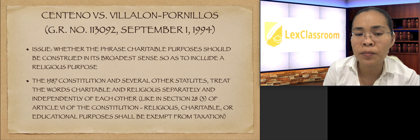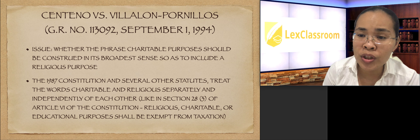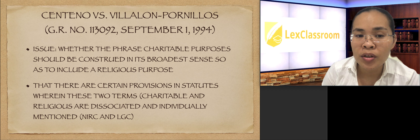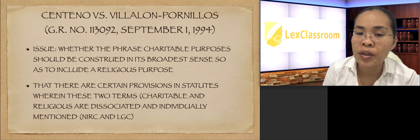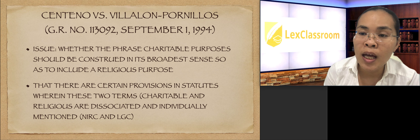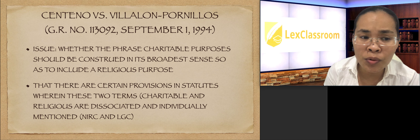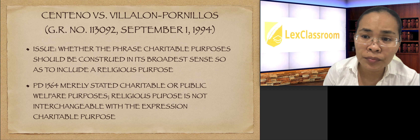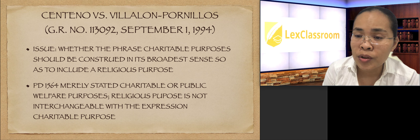For example, Section 28, paragraph 3 of Article 6 of the Constitution states that religious, charitable, or educational purposes shall be exempt from taxation. Aside from the Constitution, there are certain provisions in statutes such as the National Internal Revenue Code and the Local Government Code — especially regarding taxation exemptions — where these two terms, 'charitable' and 'religious,' are dissociated and individually mentioned.